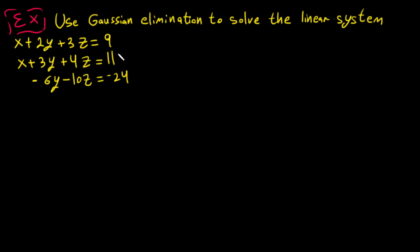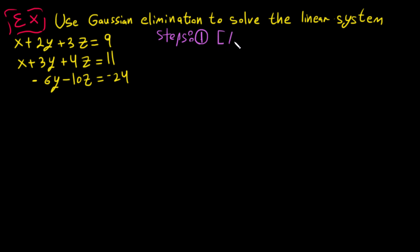We are going to solve the system by using Gaussian elimination. We have to know the steps to solve this system. We have three steps. Step one: we have to write it as an augmented matrix — [A|B] — where A contains the coefficients and B the constants.